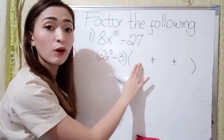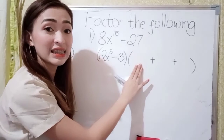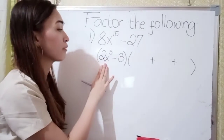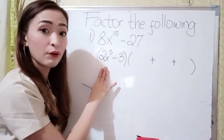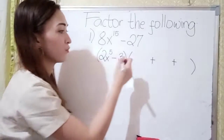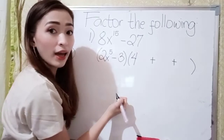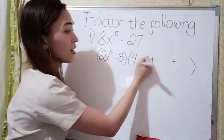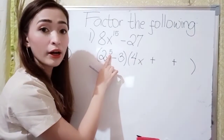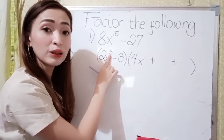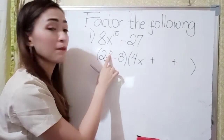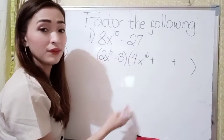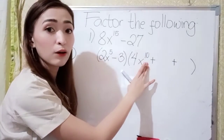In our first term, what we're going to do is just find the square of the first term. So, this is our first term. What is the square of our first term? 2 times 2 is 4, so we have 4 here. We have x, and what we're going to do with the exponent is multiply it by 2. So, 5 times 2 is 10. So, we have 4x to the 10th power.